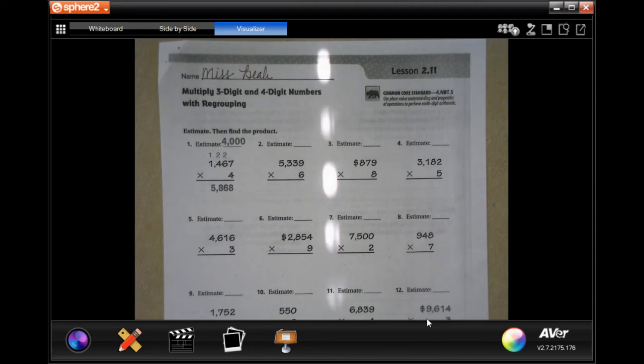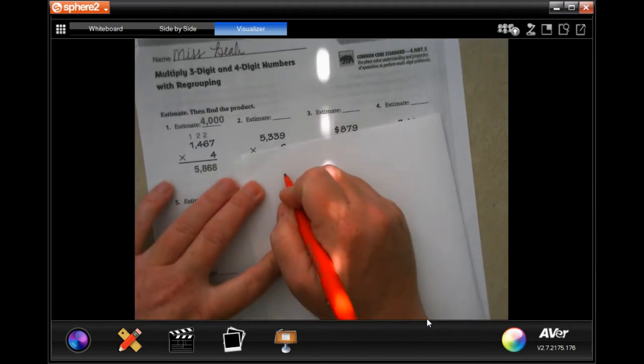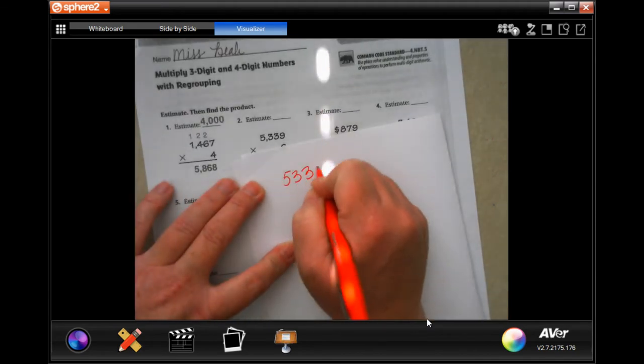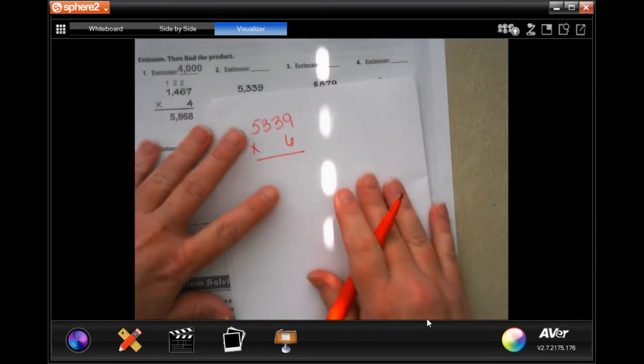So I'm going to go ahead and I'm going to get a scrap paper for us to estimate just because it's easier, faster. Okay, so it says 5,339 times 6. So if we estimate,